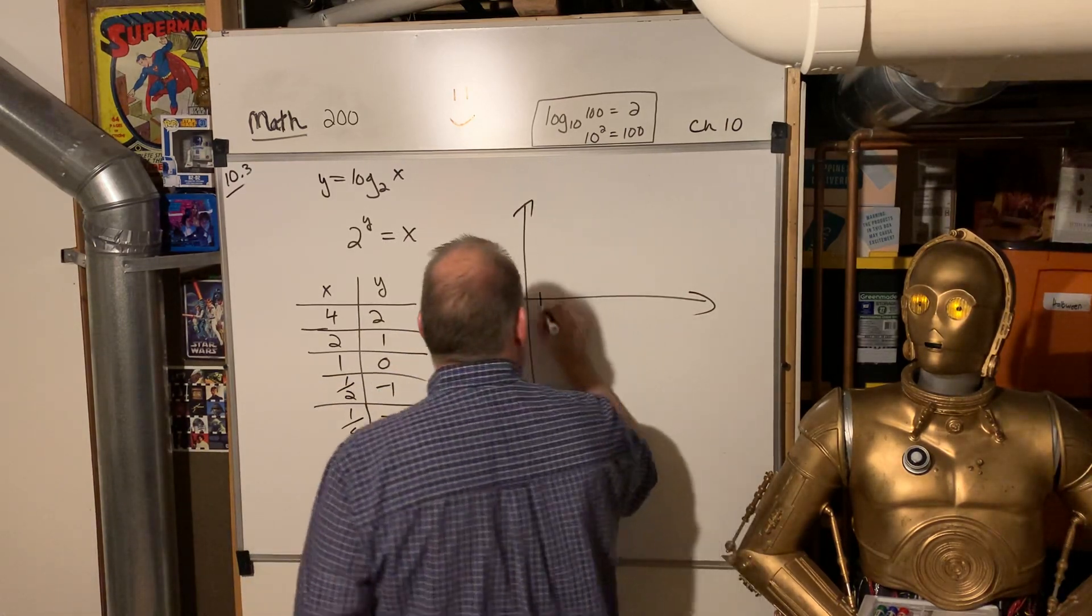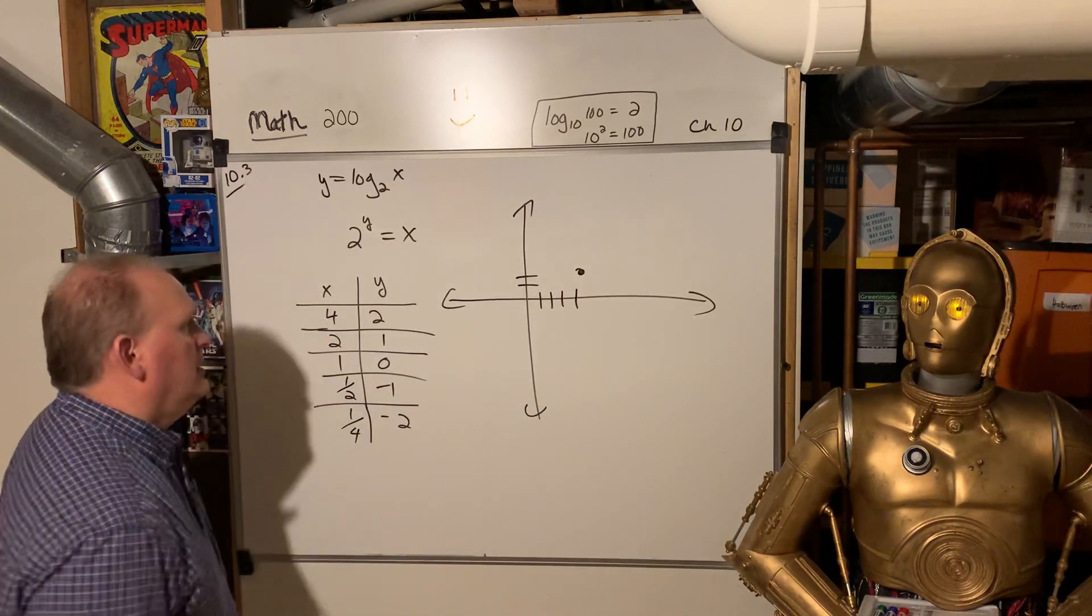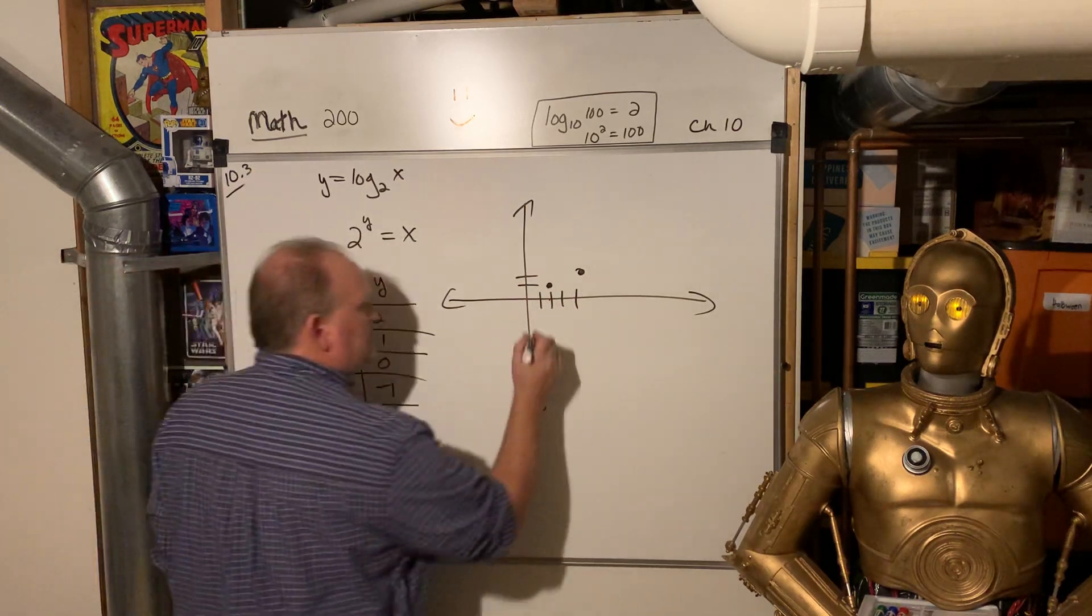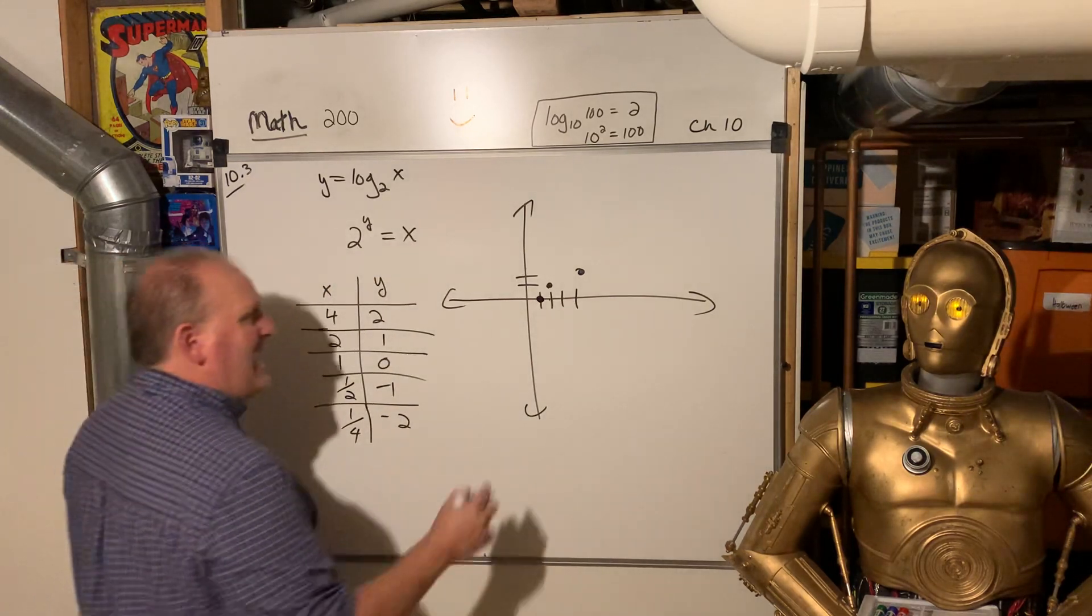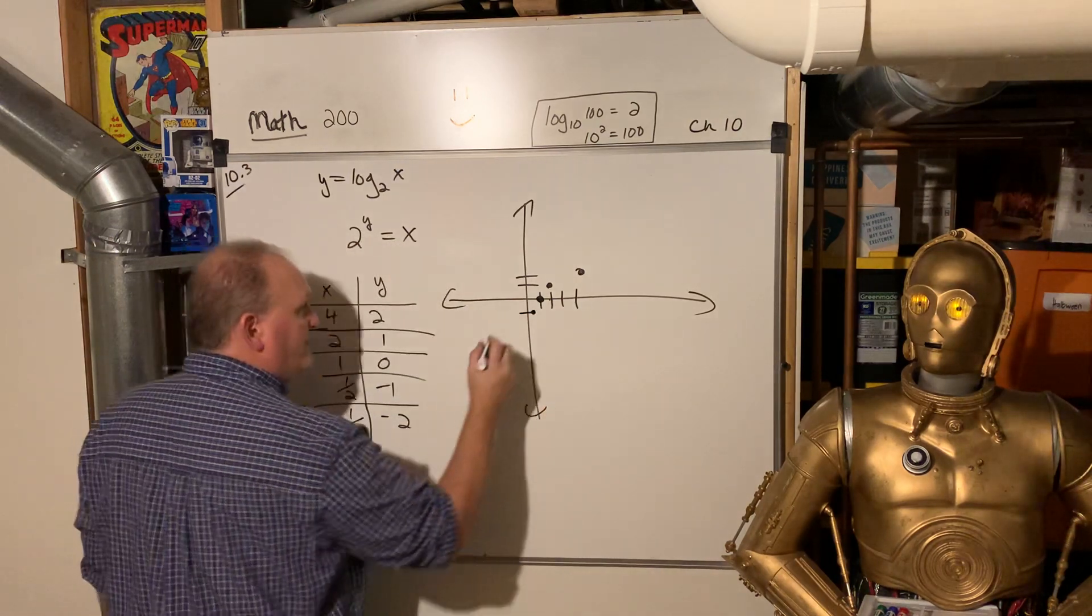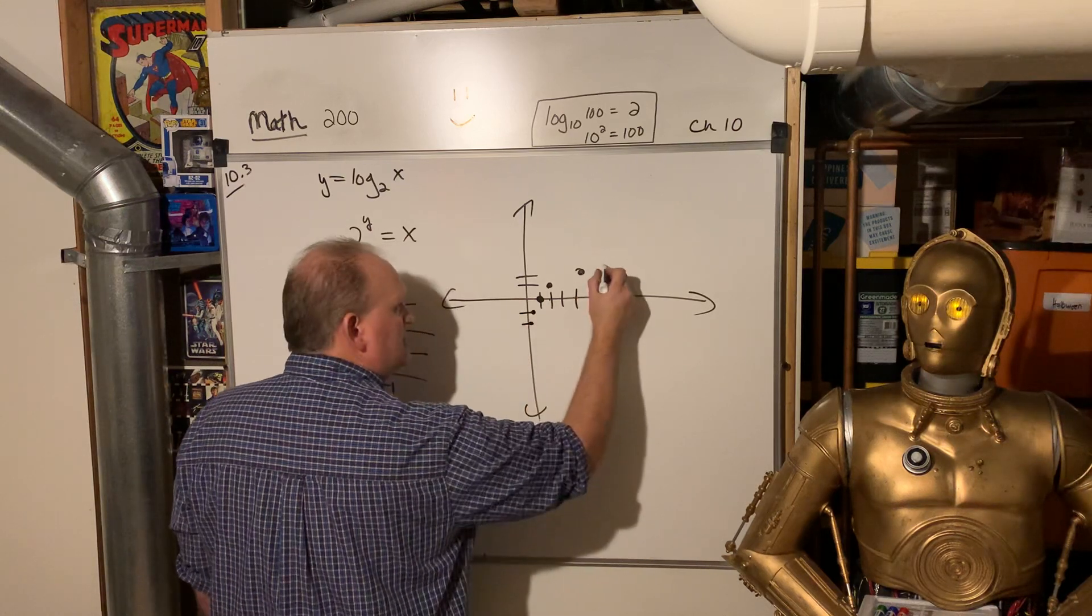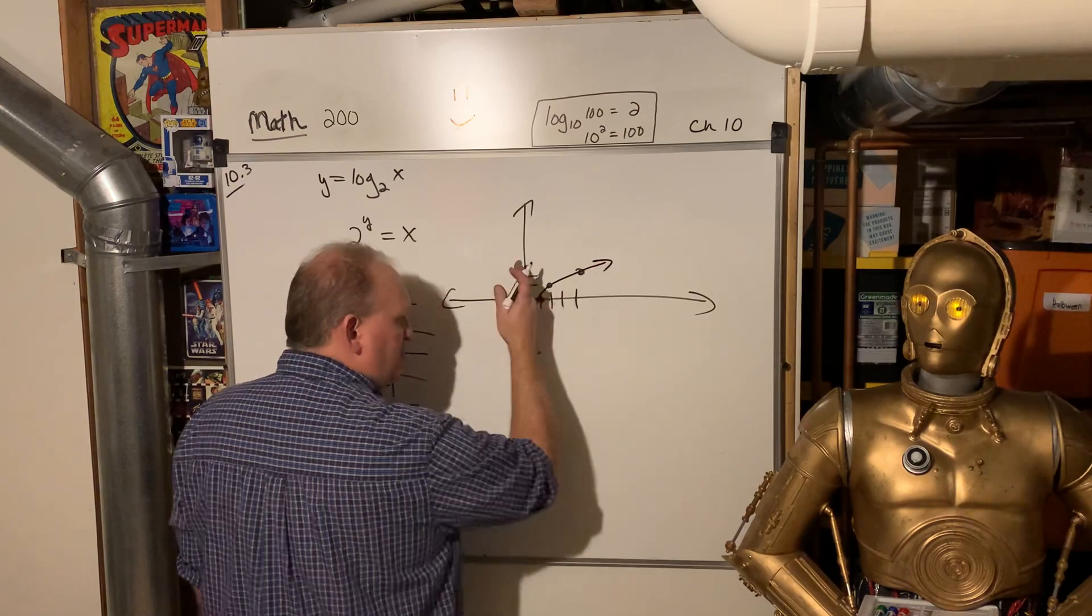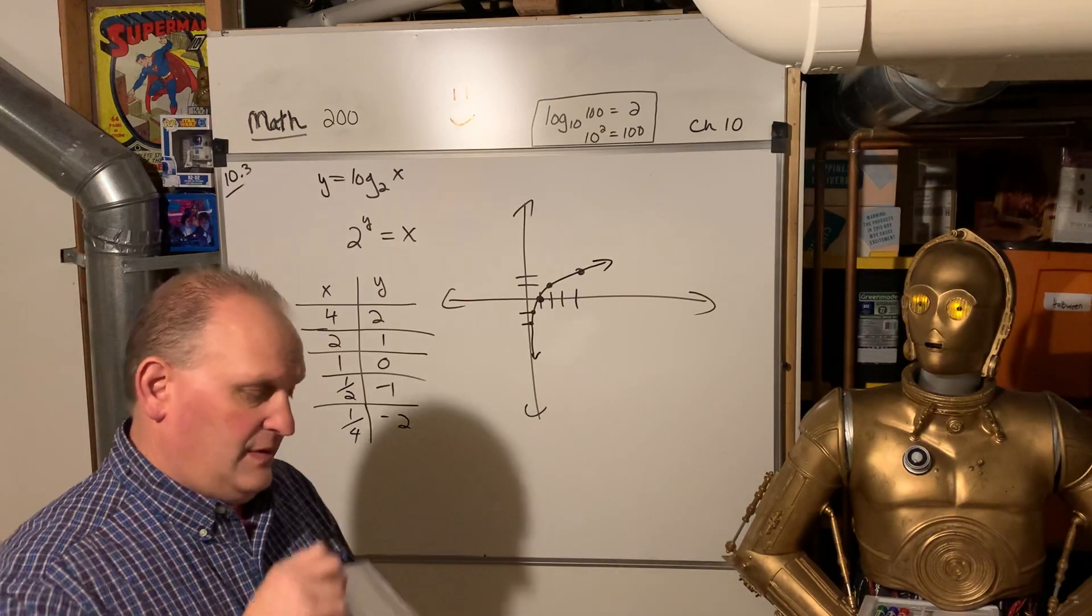So four, one, two, three, four, comma, two, that's right there. Two, comma, one, that's right there. One, comma, zero, that's right there. And then one half, half on x is down one on y. And then one fourth, so even closer to zero is down two. And so you get this logarithm function. So it's approaching the negative y axis, but it'll never cross it. All right.